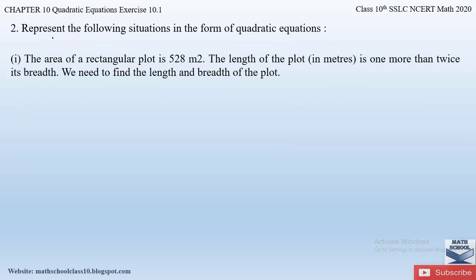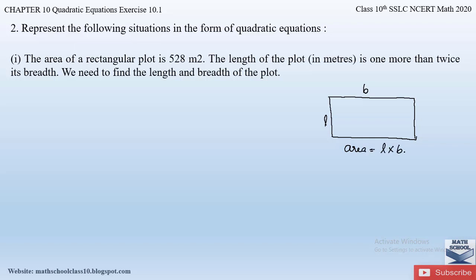The first part of question number 2: the area of a rectangular plot is 528 square metres. The length of the plot is one more than twice its breadth. We need to find the length and breadth of the plot and represent this situation in the form of a quadratic equation. Since they mention a rectangular plot, let me draw a rectangle — this is the length and this is the breadth.